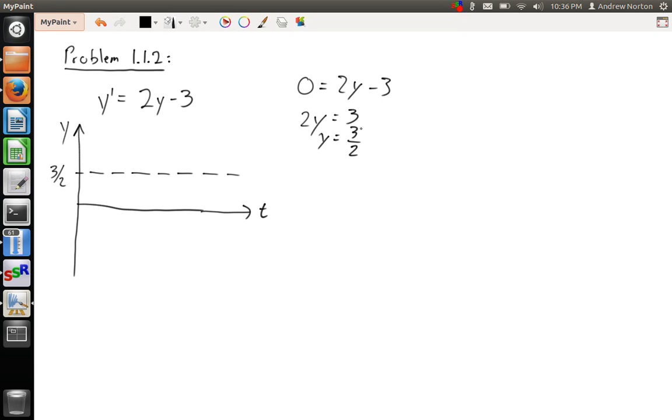Okay, so now what happens as y gets larger? Well, as y gets larger, that means that this part's going to get larger and the overall derivative will become more positive. So we start sloping up, more and more up, and then nearly vertical as time goes on.